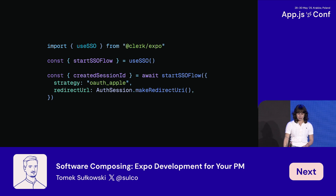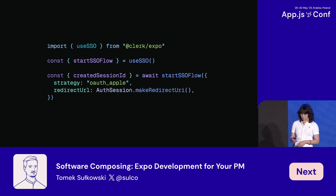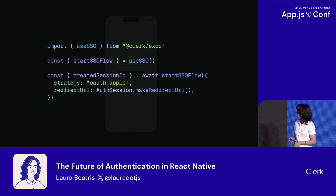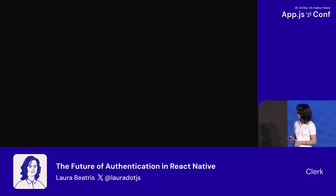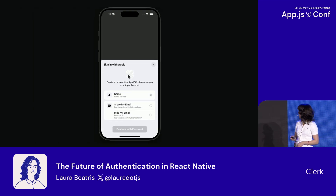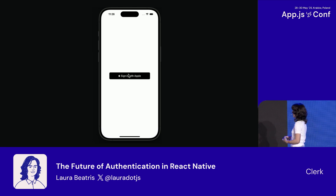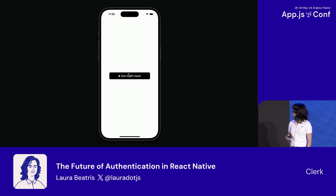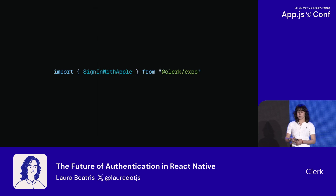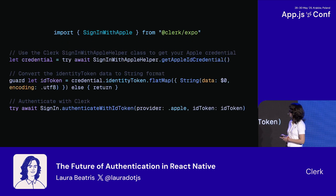Now it's the native part. If you want to make it seamlessly integrated, we can use native Apple Sign-In. It's much faster — there's no context switch, no opening a web view. And that's what we are going to expose as a simple component, leveraging Expo native modules behind the scenes with our native iOS SDK.